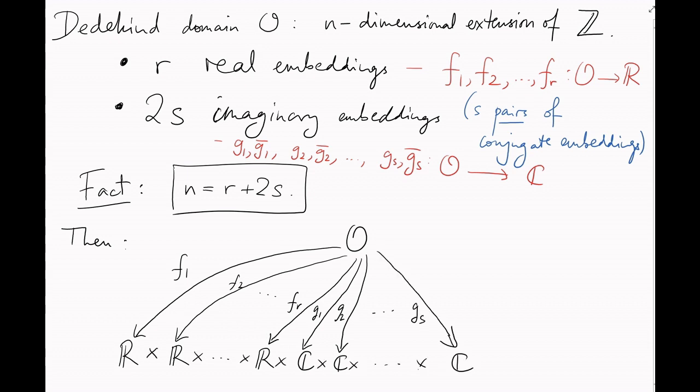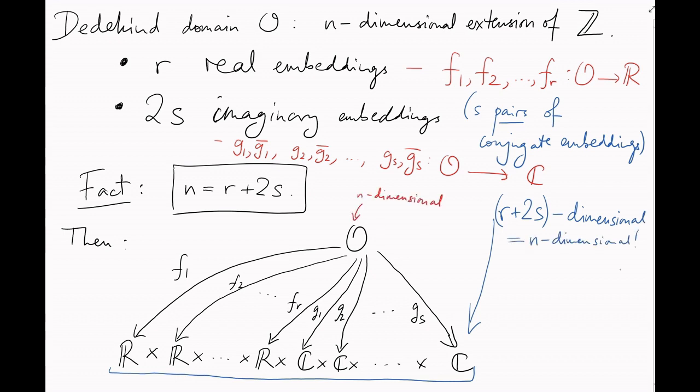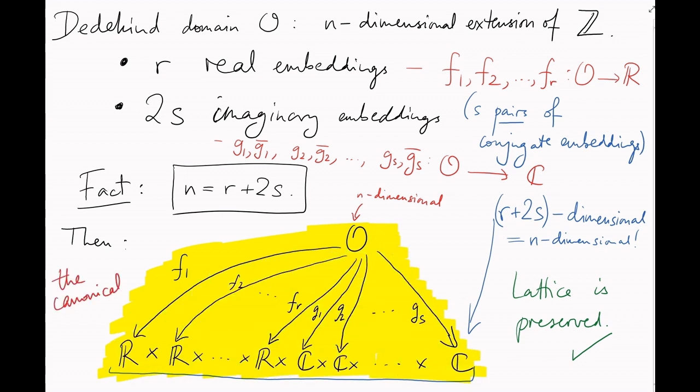Each of the real lines is one-dimensional. Each of the complex planes is two-dimensional. And so by putting them all together, we get an R plus 2S dimensional, that is, n-dimensional real vector space. And our n-dimensional lattice fits neatly inside here. This is what number theorists call the canonical embedding.